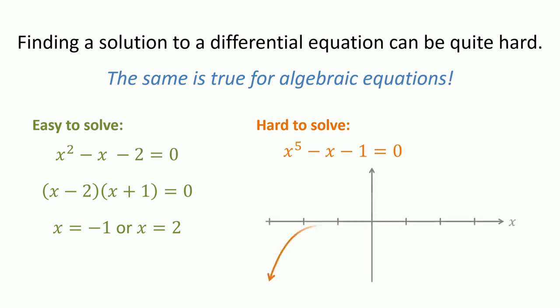For example, the intermediate value theorem shows that x to the fifth minus x minus 1 equals 0 has a solution between 1 and 1.5, but this root cannot be expressed in terms of radicals, though it can be approximated numerically.